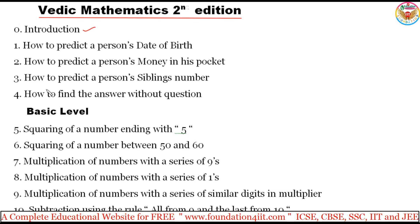So in this introduction, before starting the basic level, first of all let me explain these four concepts clearly: how to predict a person's date of birth, how to predict a person's money in his pocket, how to predict a person's sibling number, and how to find the answer without a question. Just some simple and tricky concepts to get some idea and interest — I will show these four topics first.